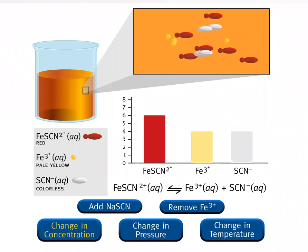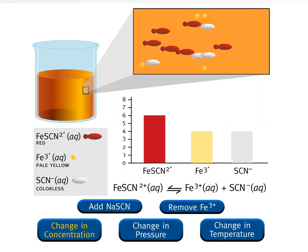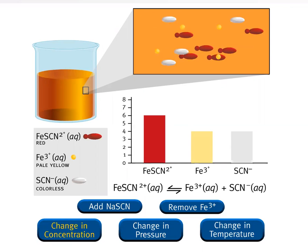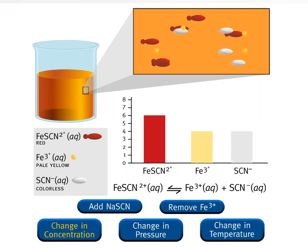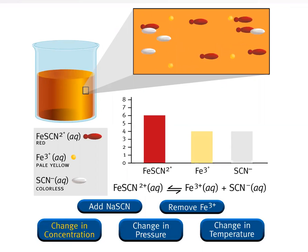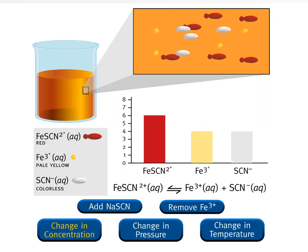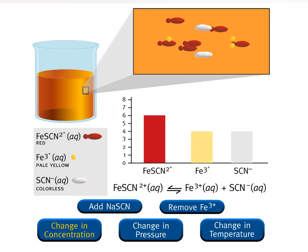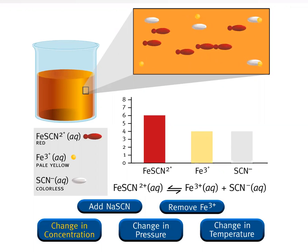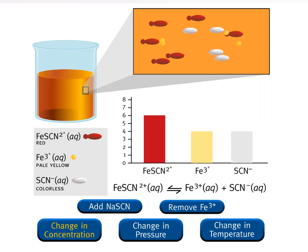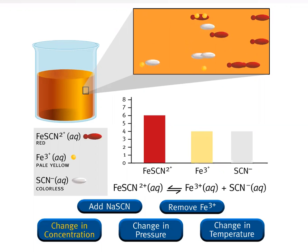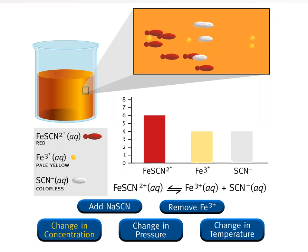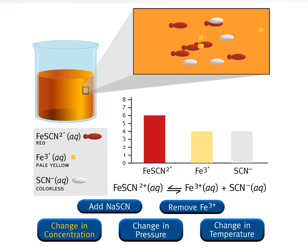Iron thiocyanate, Fe(SCN)₃, dissolves readily in water to give a red solution. The red color is due to the presence of hydrated iron thiocyanate ions, Fe(SCN)²⁺. The equilibrium between undissociated iron thiocyanate ions, iron 3-plus ions, and thiocyanate ions, SCN⁻, is given by this chemical equation.